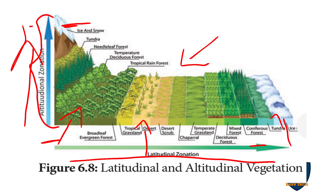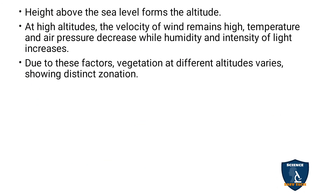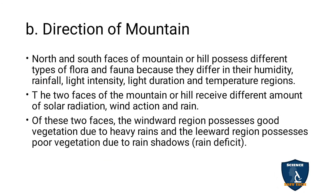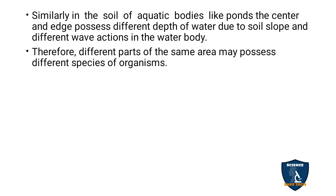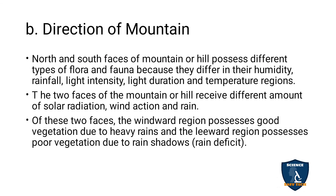Because of these altitudinal conditions, vegetation shows different zonation. Regarding the direction of mountain: the north and south faces of a mountain or hill possess different types of flora and fauna, because they differ in their humidity, rainfall, light intensity, light duration, and temperature. The variation in climatic conditions between the north and south faces results in different types of fauna and flora.